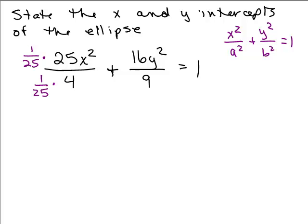So for this first fraction, what will that give me? The 25ths cancel, which is good. So my numerator will be x squared and what will my denominator be? It'll be a fraction, 4 25ths. Okay, that's okay, but it is what it is.